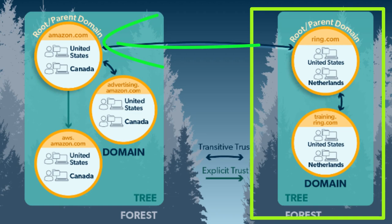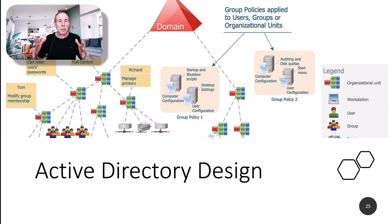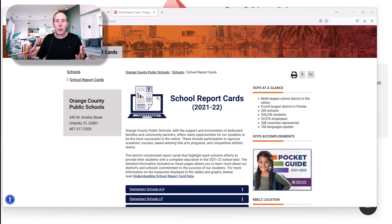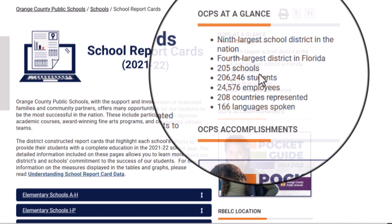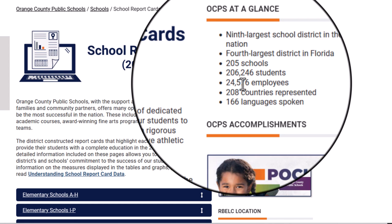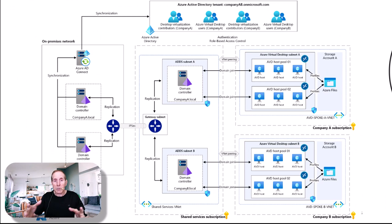Once you're employed as an IT professional in a company, you need to start digging in and understanding not only Active Directory but how your company implements it. There are lots of ways to design Active Directory: a forest root domain, multiple subdomains, or external domains connected through the forest. The recommendation is to keep your domain design as simple as possible. Active Directory is capable of handling an enormous amount of objects. Orange County Public Schools — the ninth largest district in the US, with over 205 schools, 206,000 students, and 24,000 employees — uses a single domain, and that is more than adequate.